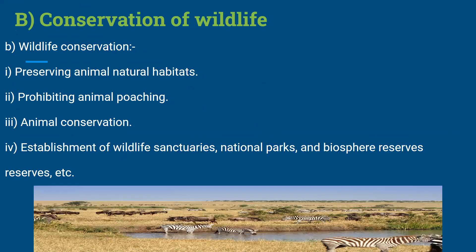Conservation of wildlife: first, preserving animals and their natural habitats — protecting them from hunters and those who destroy habitats. Second, prohibiting animal poaching — killing, selling, trafficking, or torturing animals must be stopped. Third, animal conservation efforts. Fourth, establishment of wildlife sanctuaries, national parks, and biosphere reserves to conserve wildlife.